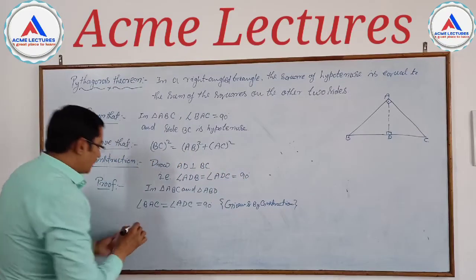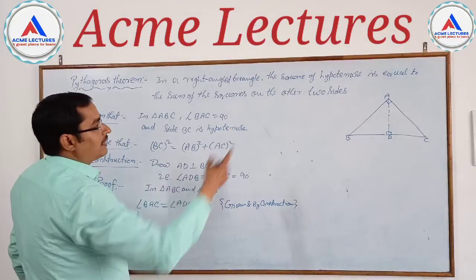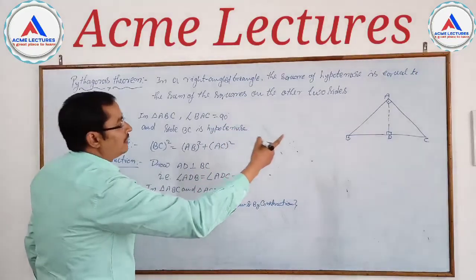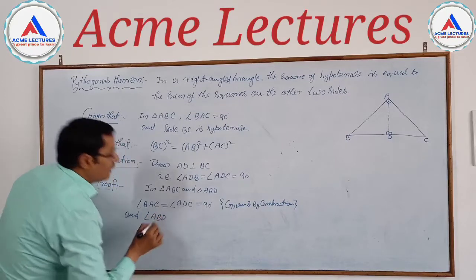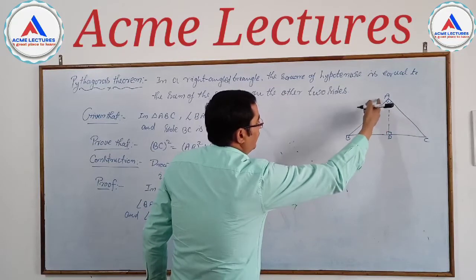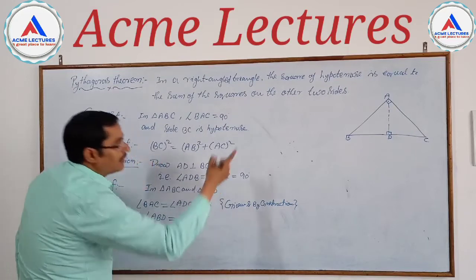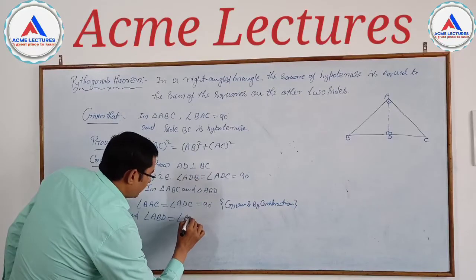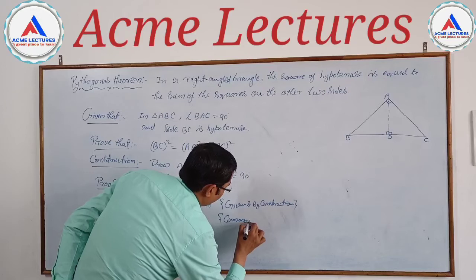Second condition for similarity: angle ABD equals angle ABC. This is a common angle shared by both triangles.